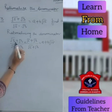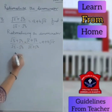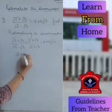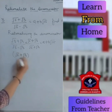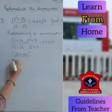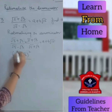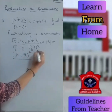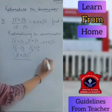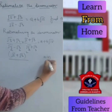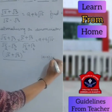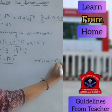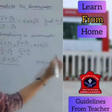Multiplying the numerators: we have the same term, so it can be written as root 5 plus root 3 whole squared. For the denominator, if root 5 is A and root 3 is B, then we have A minus B into A plus B, and using the identity A minus B into A plus B equals A squared minus B squared, it becomes root 5 whole squared minus root 3 whole squared.